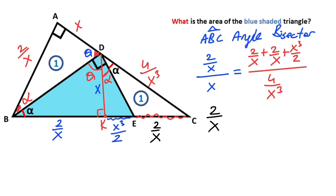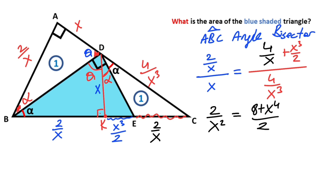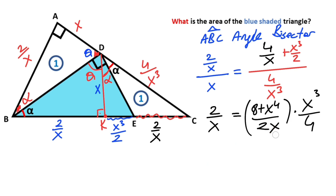Therefore, 2 over x squared equals 4 over x. Equalizing denominators: 8 plus x to the power of 4, over 2x times x cubed over 4. Simplifying the expression further gives us the next equation.